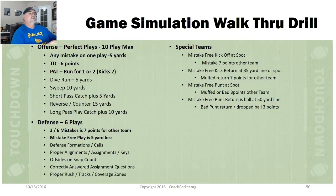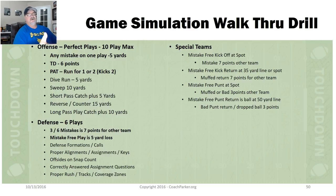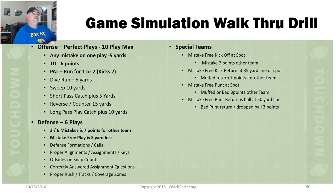On the offense side, we're trying to do perfect plays, and there's a 10-play max. Any mistake on one of the offensive plays is a penalty — I've got a flag and whistle, I throw it, and it's a five-yard loss. Any little mistake. You can get harder and harder as the season progresses, or be loose if you're trying to get through plays quickly. But the stricter you are, the better your players get. If they actually get down and score, it's six points and then a PAT.